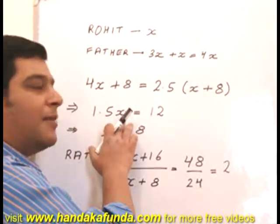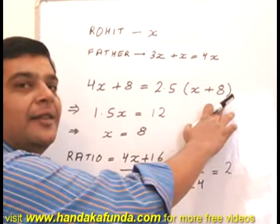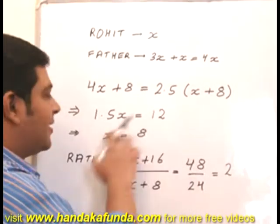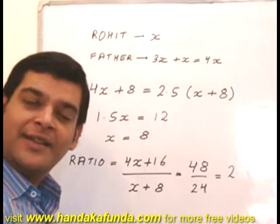A simplistic equation to solve. 2.5X comes here. This becomes 1.5X. 8 is here. 2.5 into 8 is 20. 20 minus 8 is 12. I divide 12 by 1.5 to get the value of X as 8. But that is not my question.